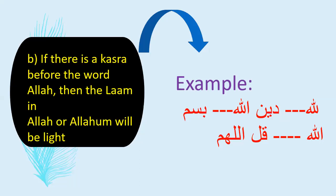The name of Allah preceded by Kasra makes the Lam light. Examples: 'Deenillahi', 'Bismillah', 'Qulillahi humma' — all have Kasra before the Lam, so the Lam is light.